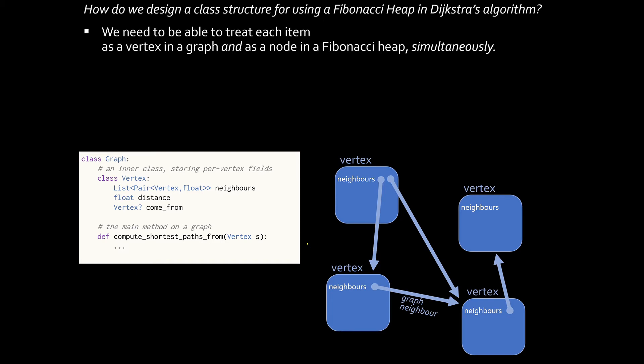Here's one possibility. I'm imagining a graph class. The main method of this graph class is compute shortest paths from, and you give it a start vertex. Each vertex will maintain, for example, a list of its neighbors with associated edge weight. If we're running Dijkstra's algorithm, we'd want to store the distance from the start vertex.